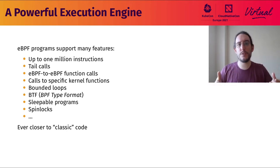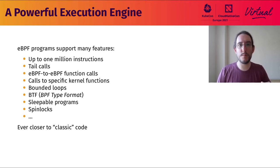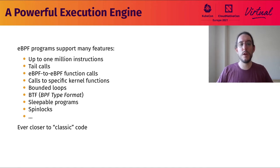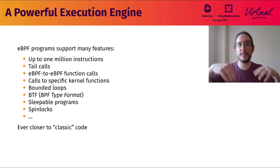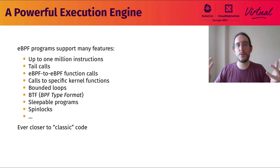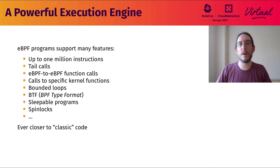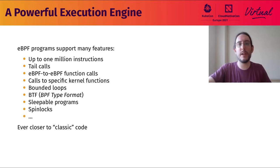In addition to those features, the BPF subsystem itself is getting improved. We now have up to one million instructions per program, making it flexible for a wide number of use cases, even advanced ones. We have tail calls, eBPF-to-eBPF function calls, and bounded loop support. All of this makes eBPF closer and closer to a regular program that you would compile from C or any other language — something very generic that you can use for all types of usage.